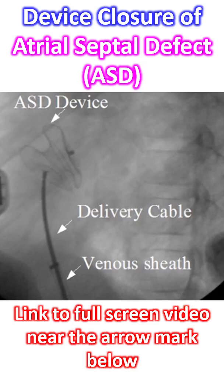One of the dreaded long-term complications of ASD device closure is aortic erosion, which is more likely to occur if the aortic rim is deficient. Fortunately, it is very rare due to precautions at the time of device implantation and pre-implant assessment.